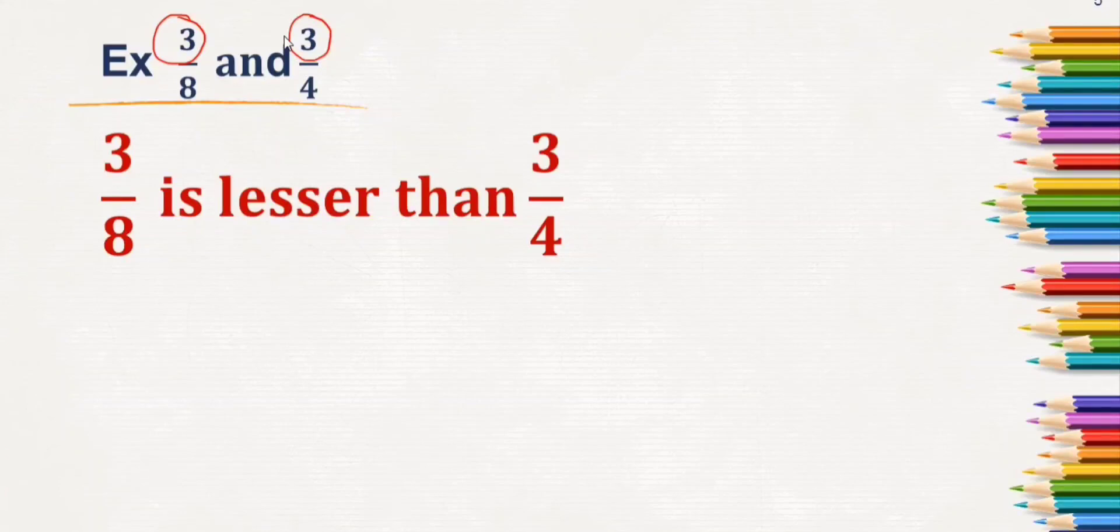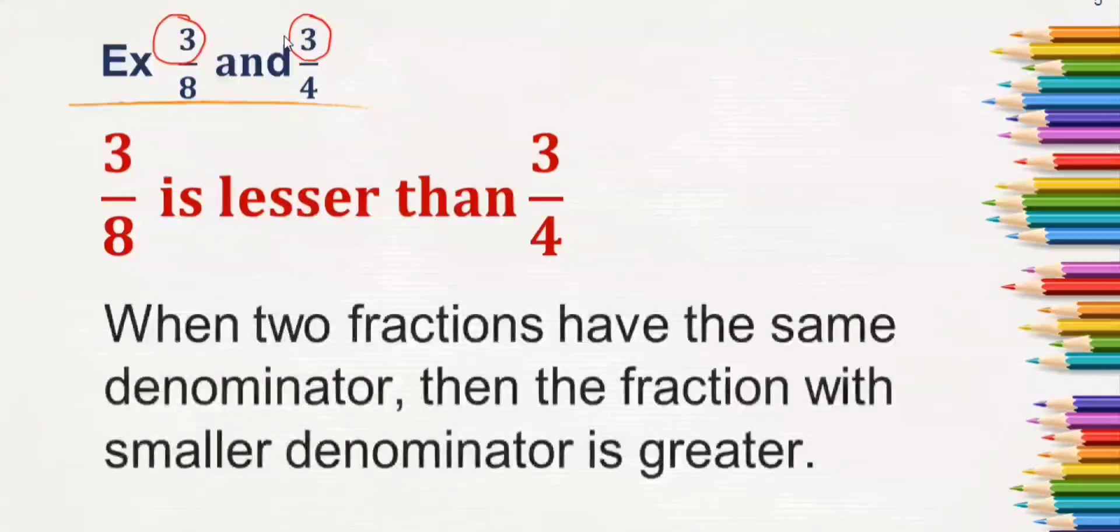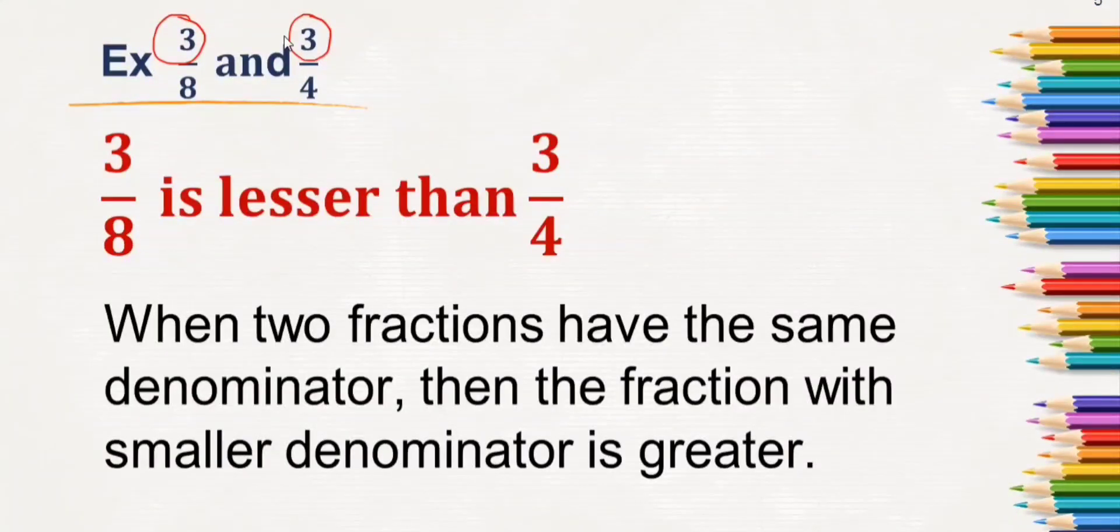It's because when two fractions have the same numerator, then the fraction with smaller denominator is greater. The smaller denominator is greater. When numerators are the same, the smaller denominator is greater. So if the denominator is smaller, means that fraction will be greater compared to another fraction.